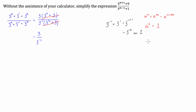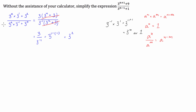We can now employ the division index law, which gives us 3 to the power of 1 subtract negative 1, which equals 3 squared. So our final answer, once we've done all of the simplification, is 3 squared, or 9.